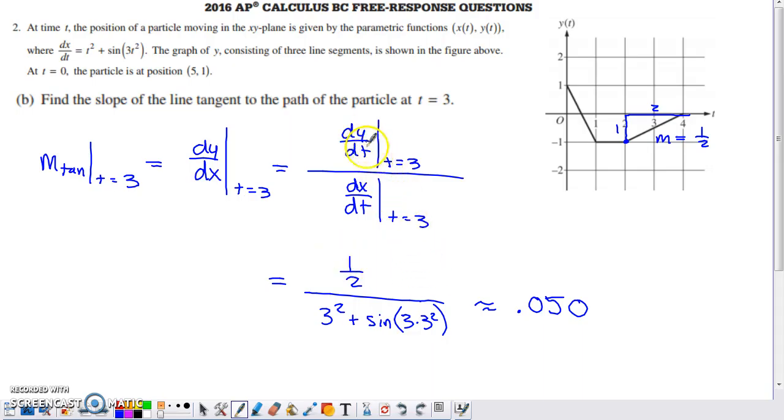We just need to evaluate these at 3 to find the slope of the tangent line at 3. If you think about dy/dt at 3, we actually mentioned this in Part A. It's going to be the slope of this graph. It's a derivative. This is a graph of y. So we need to know the slope to find the value of that derivative at 3. And that's going to be positive 1/2, just the slope of this line segment right here.